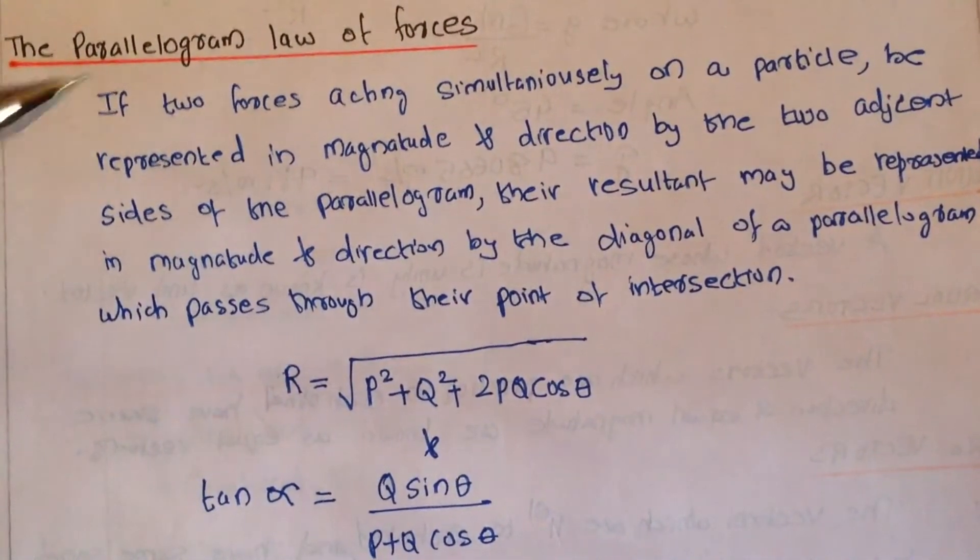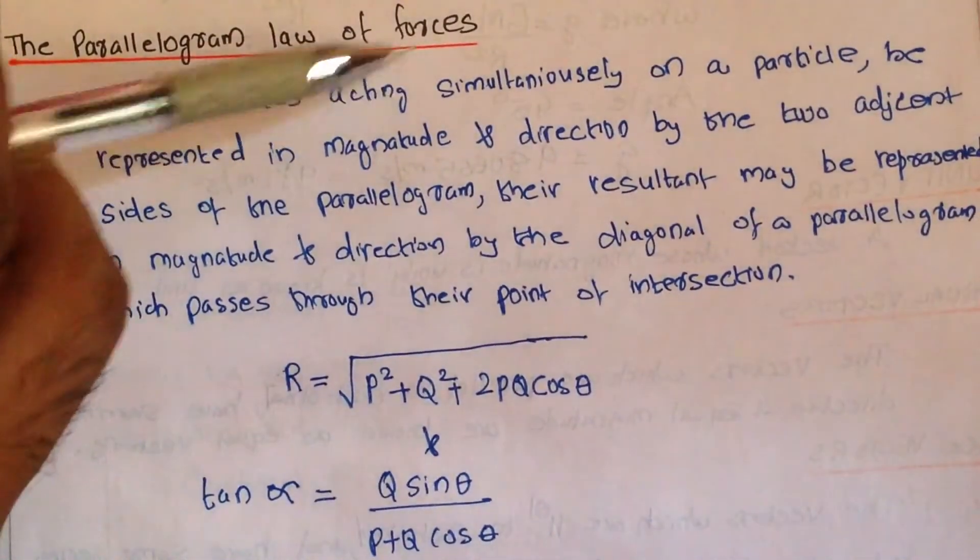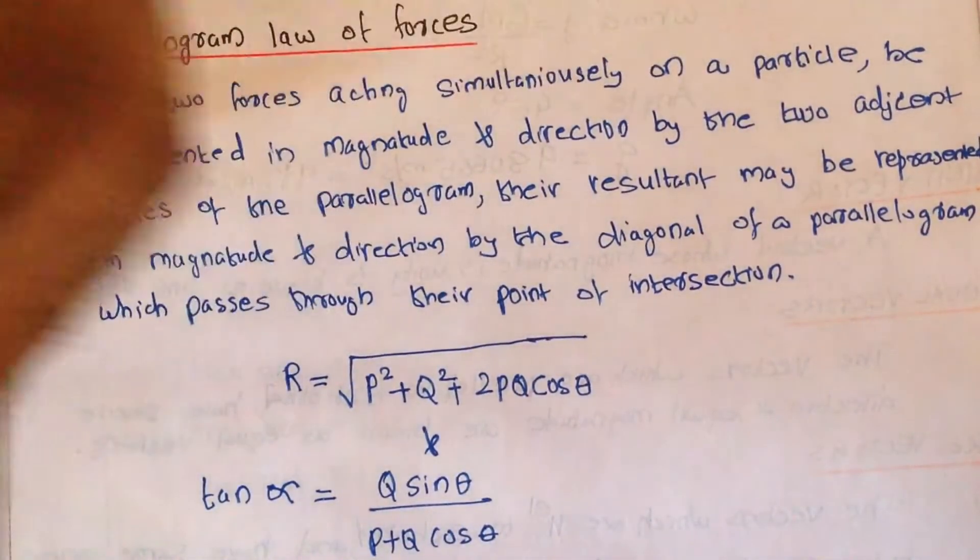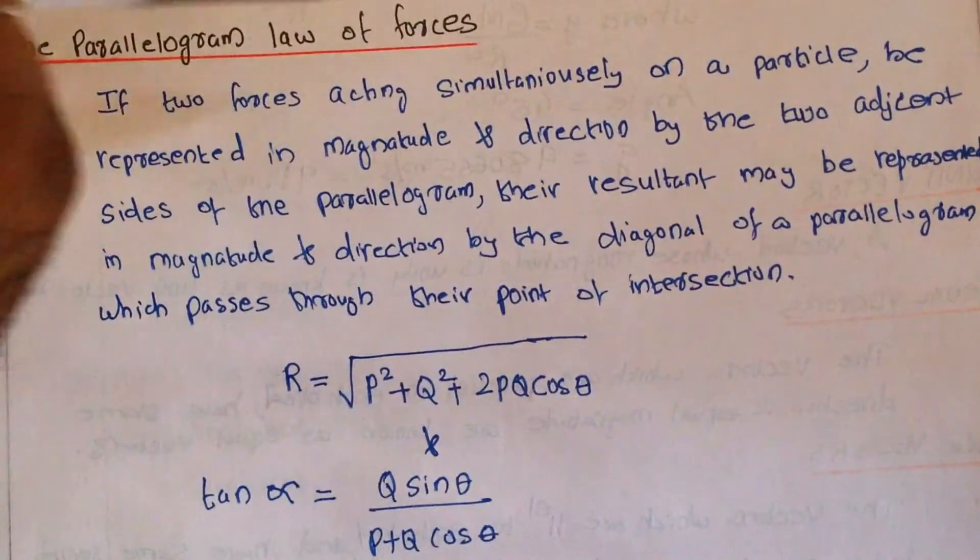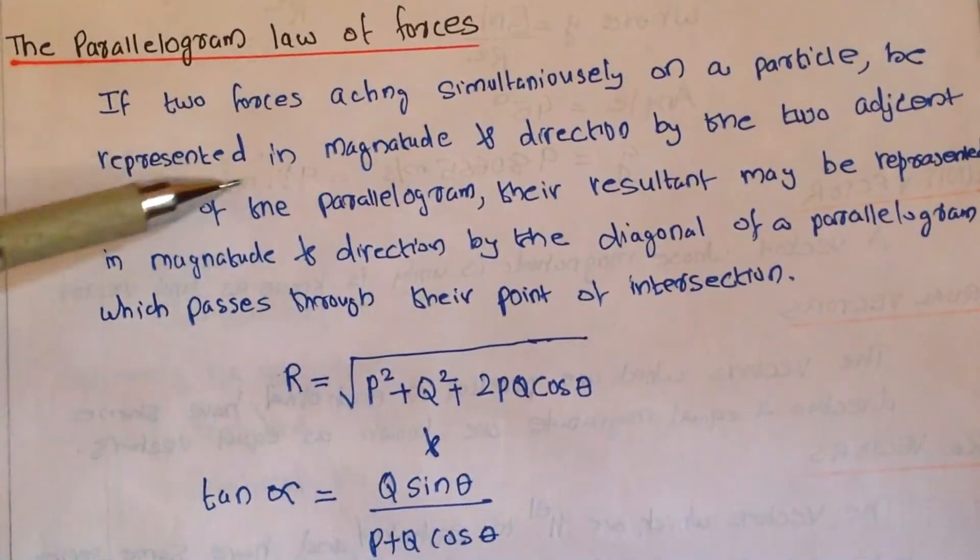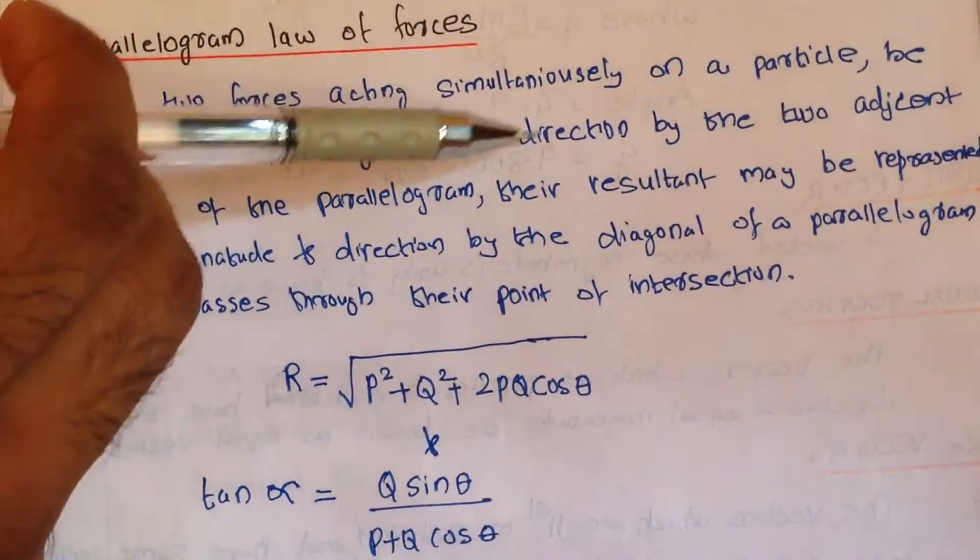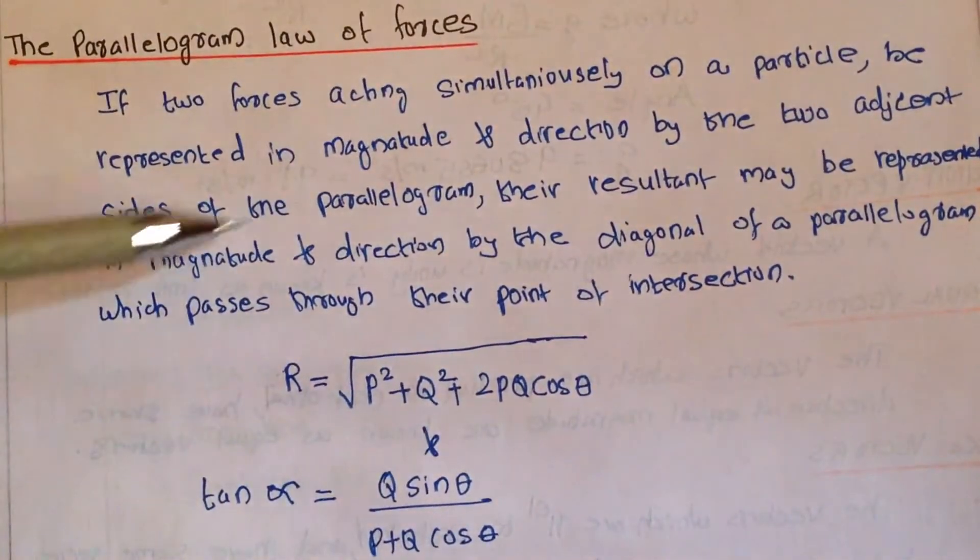So it states, if two forces acting simultaneously on a particle, imagine two forces are acting simultaneously on a particle, be represented in magnitude and direction by two adjacent sides of a parallelogram.